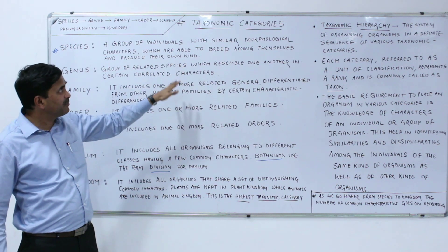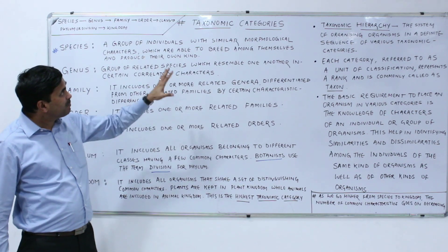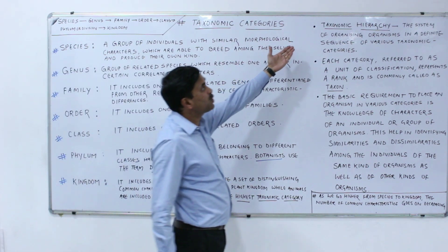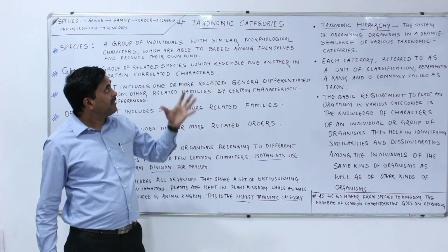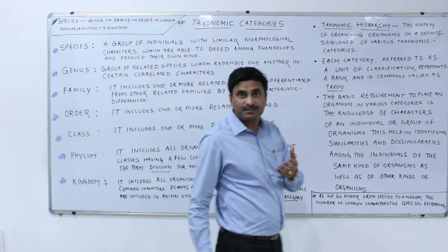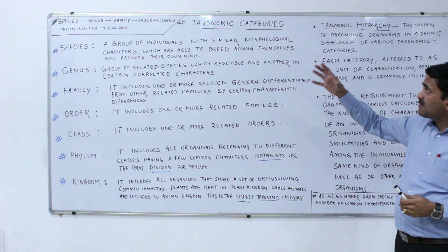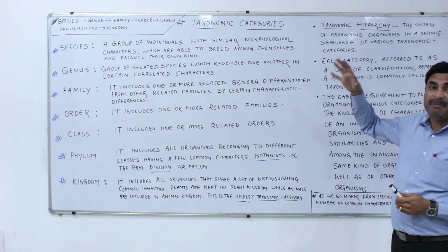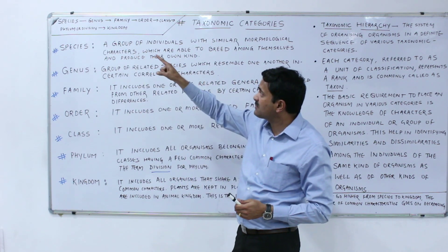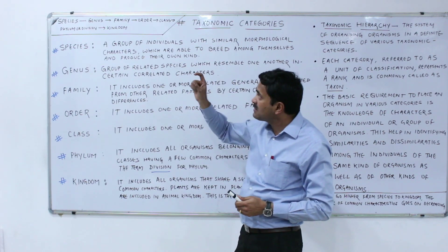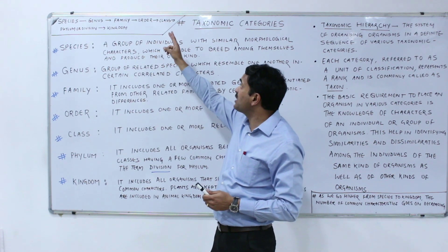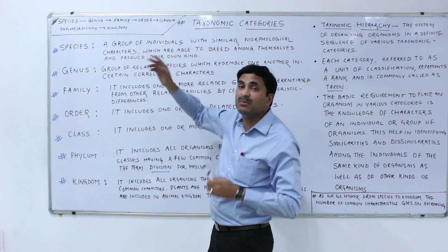Before starting taxonomic categories, we must know what is the taxonomic hierarchy. When we study taxonomic categories, we study them in a definite manner. This is the taxonomic hierarchy: first we study species, then after species we study genus, after genus we study family, after family we study order, then the class, then the phylum or division.